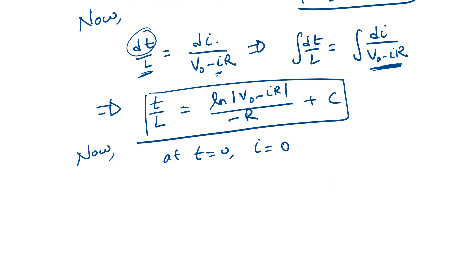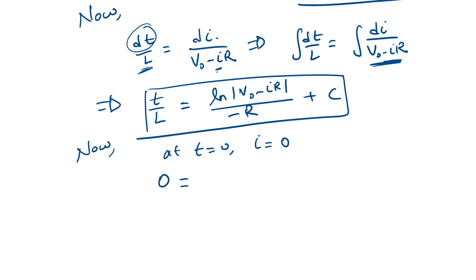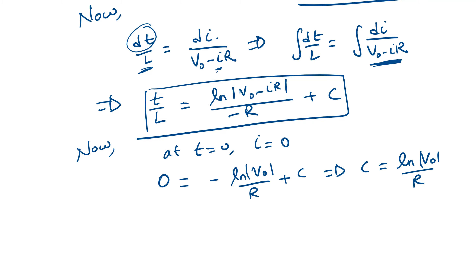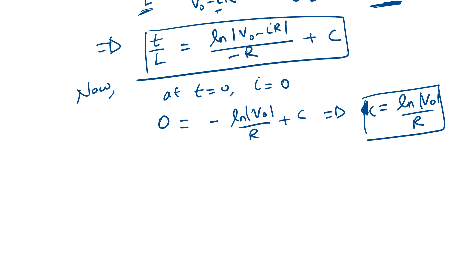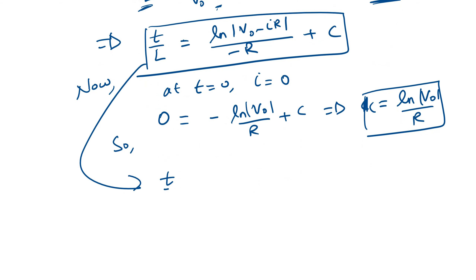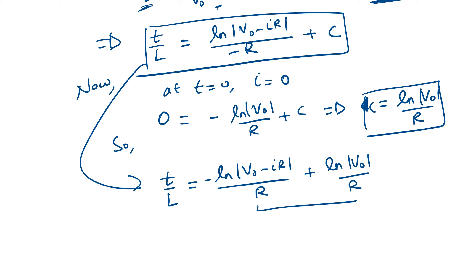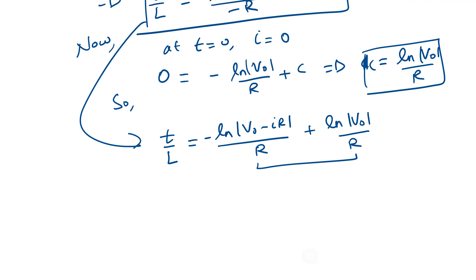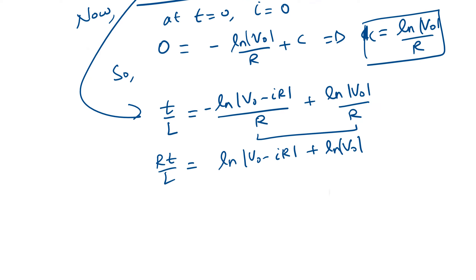We know the initial condition: at t equals to 0, the current in the circuit is 0. Substituting these values gives us 0 equals minus (1/R) ln V₀ plus C, which gives the value of C as (1/R) ln V₀. So the equation becomes: Rt by L equals ln V₀ minus ln(V₀ minus IR), taking minus R to the other side as a common factor.